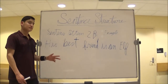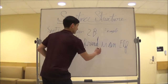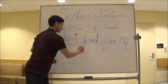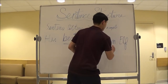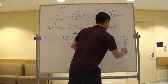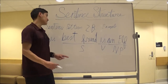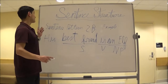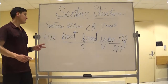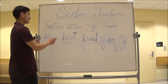Sentence pattern 2b. The example is: this best friend is an elf. We begin by underlining the verb. This best friend is the subject, and an elf is a noun phrase — because the word elf is a noun and it's describing the best friend. Unlike sentence pattern 2a where we had an adjective, now we have a noun describing the subject.